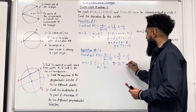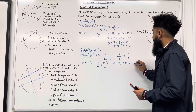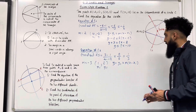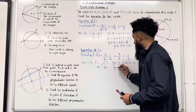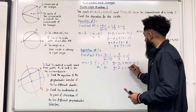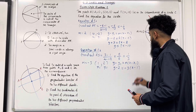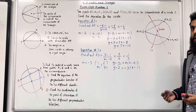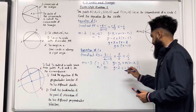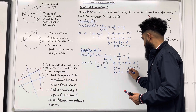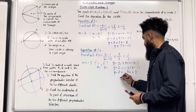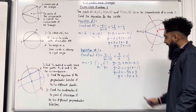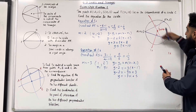Now we're going to find the equation of L2. Substituting the values in: y − 2 = −3(x − 1). Rearranging and writing in the form y = mx + c gives the equation of L2.